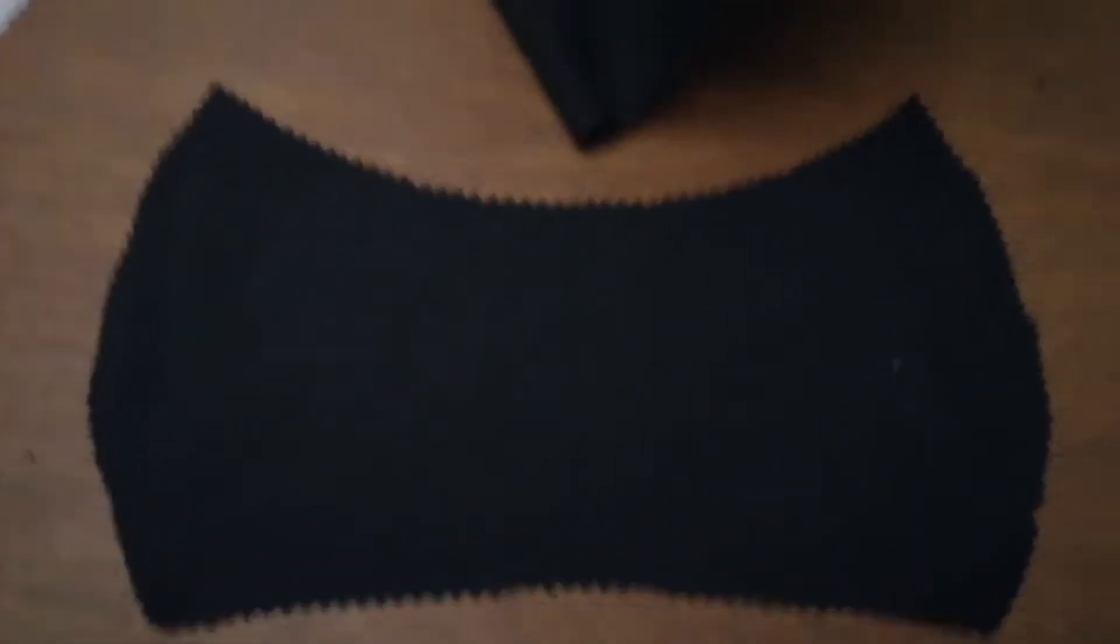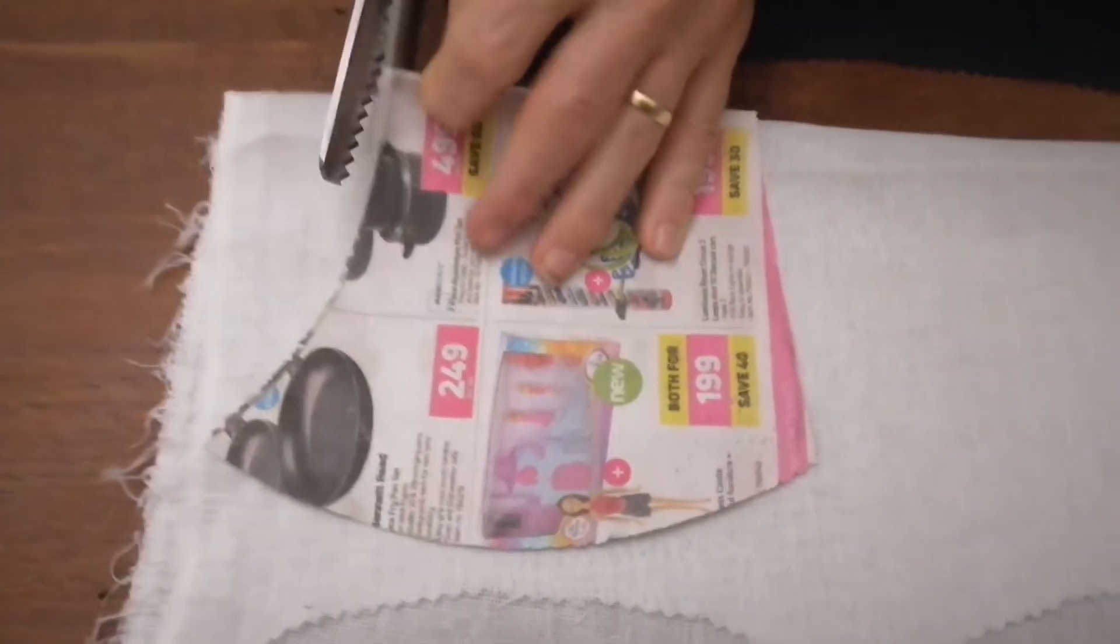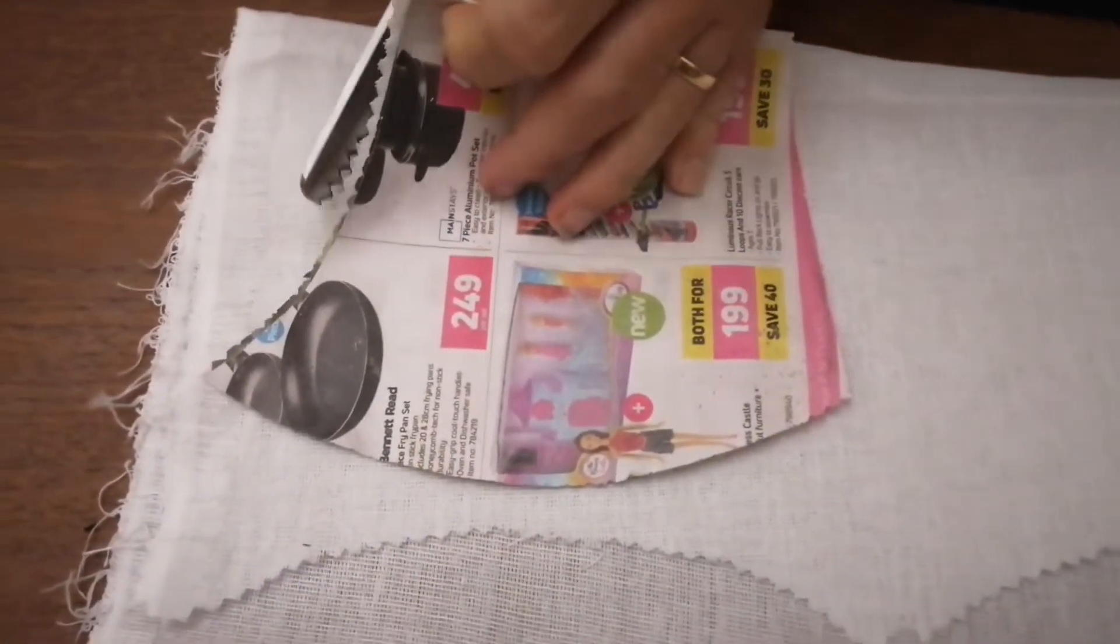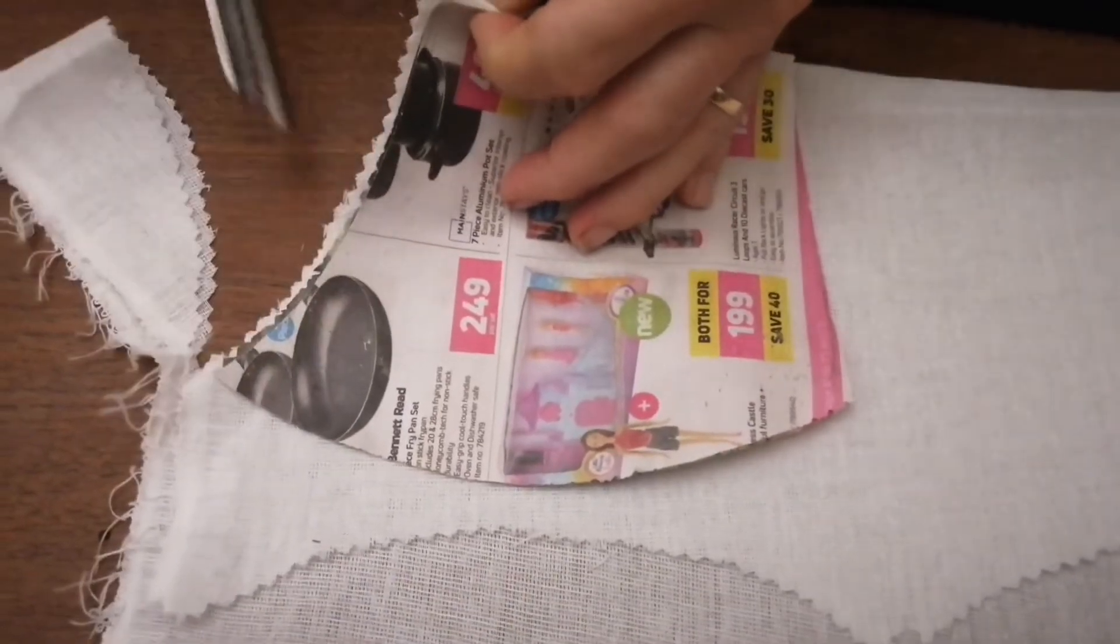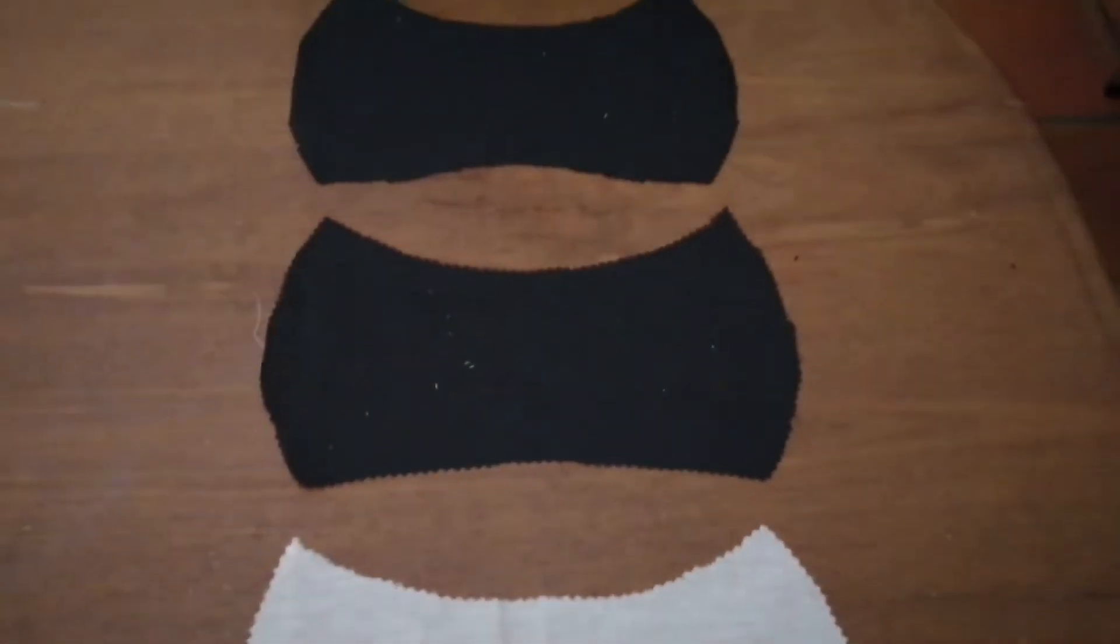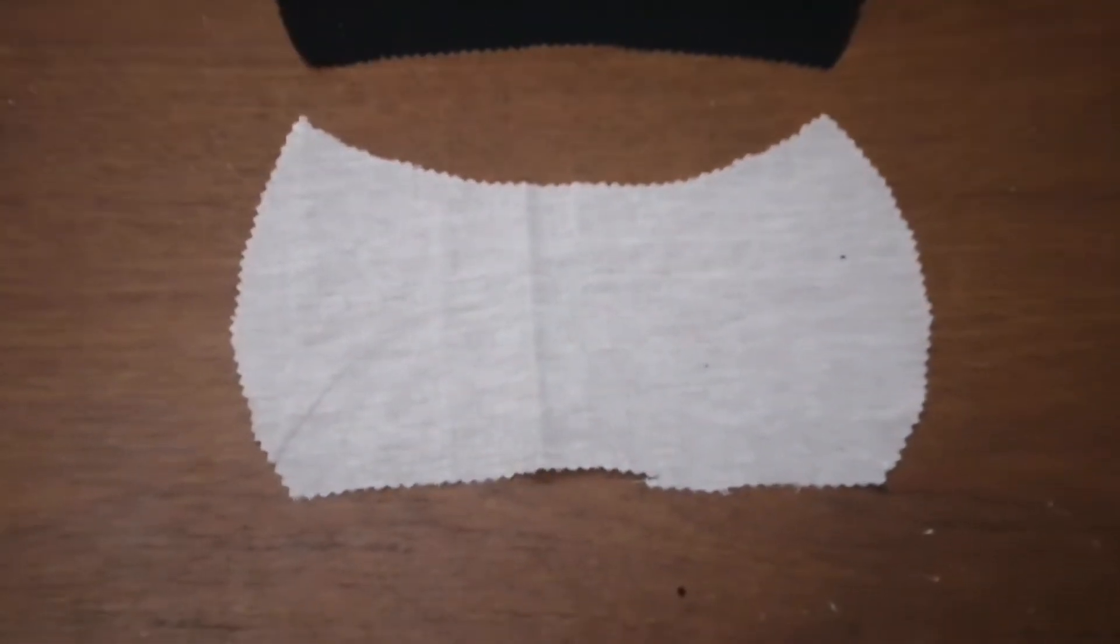And then you cut your muslin, the inner layer. And now we've got our pieces, so there's two parts there and the one here that we're going to cut in half.